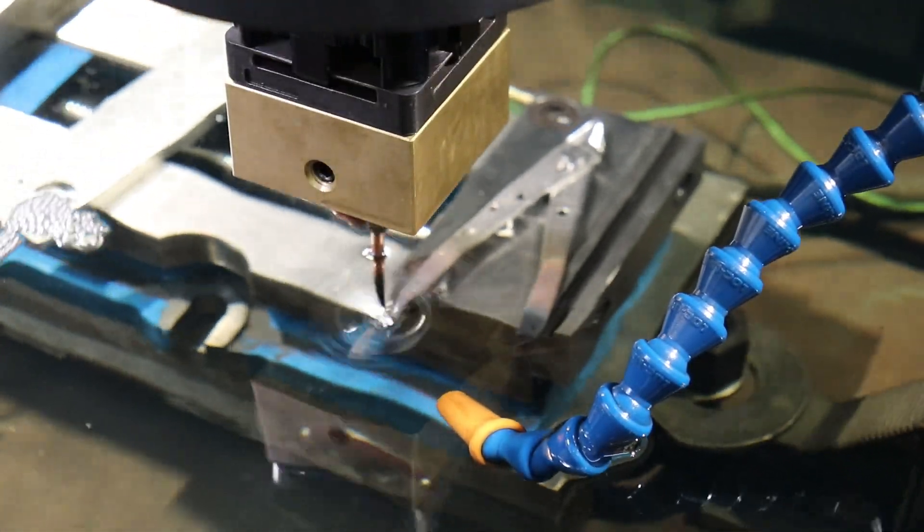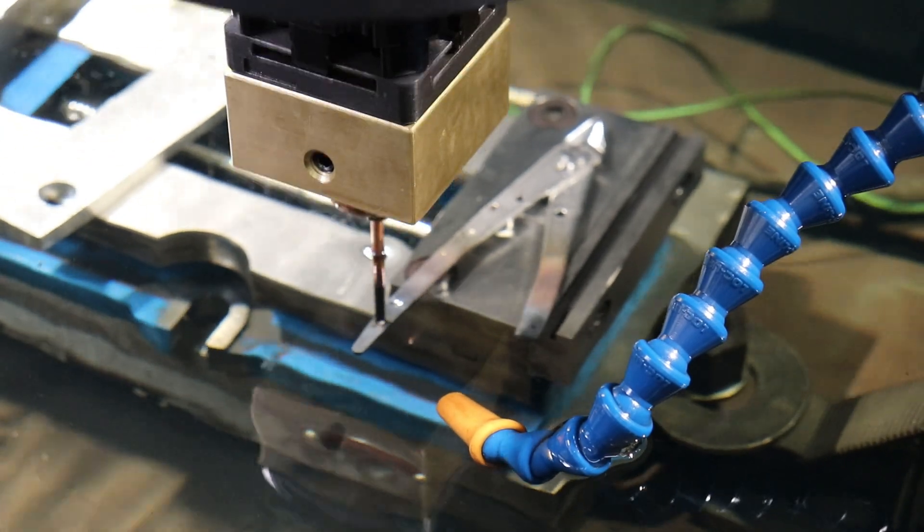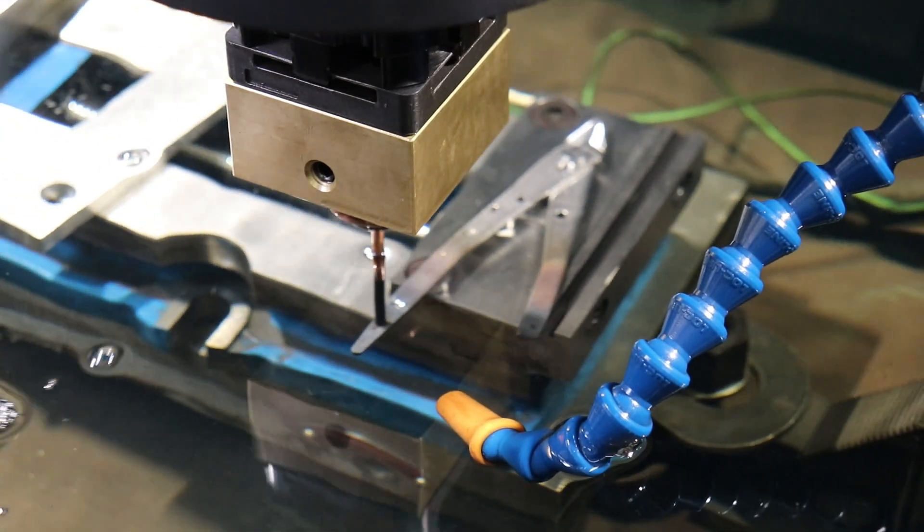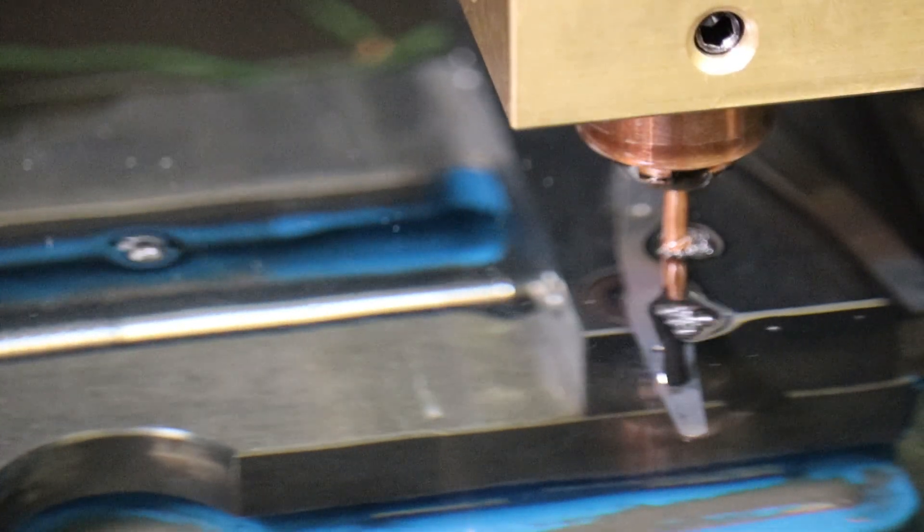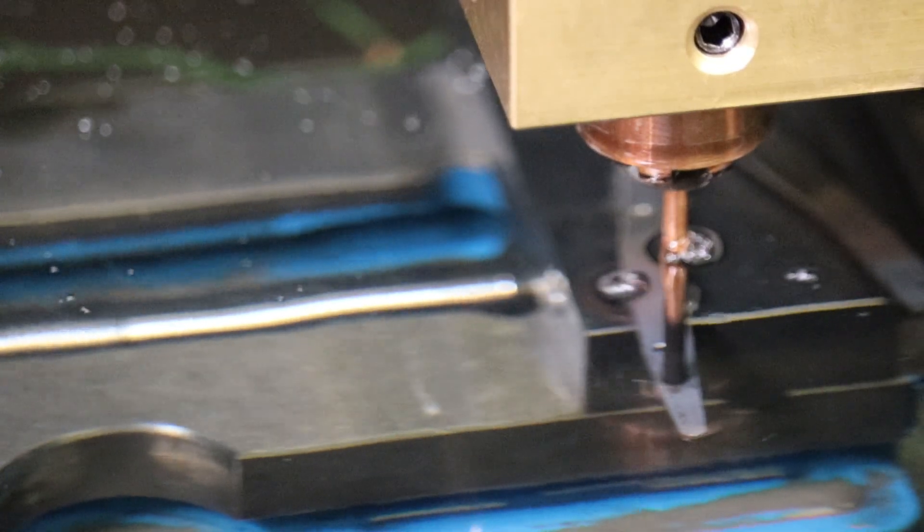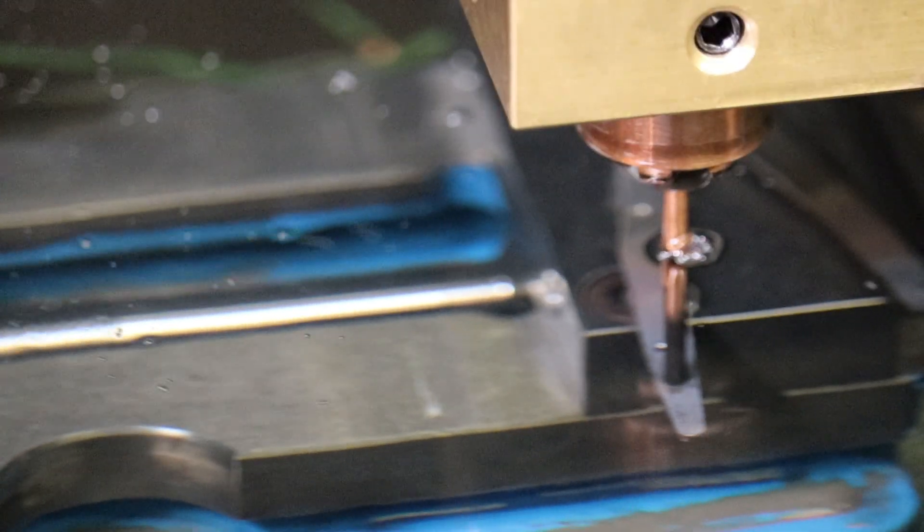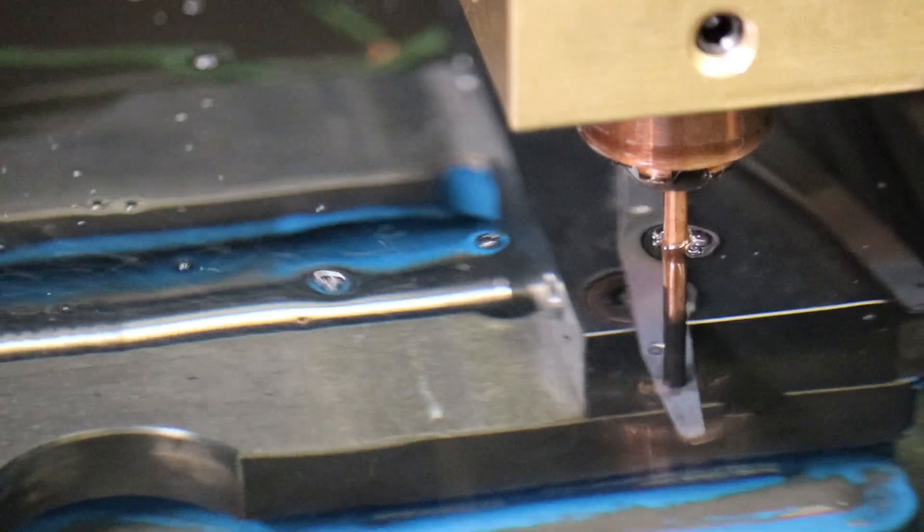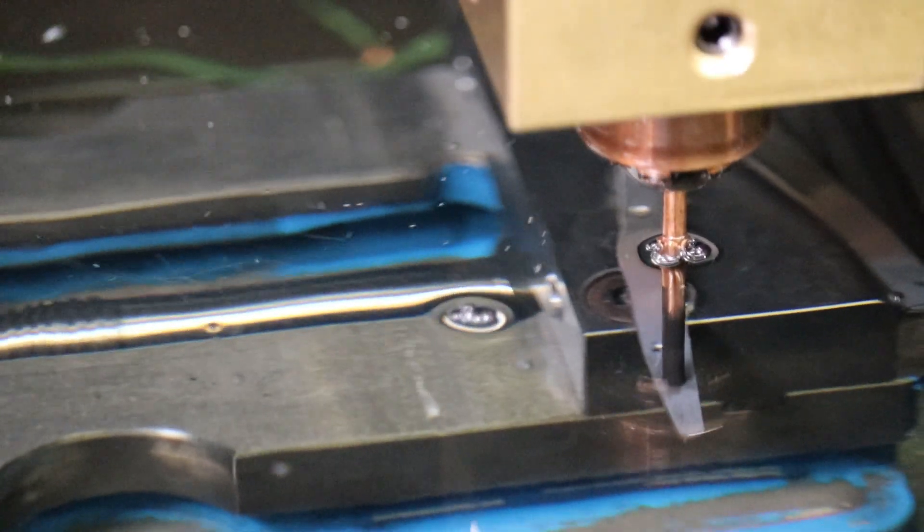The entire EDM process happens under a dielectric fluid, which is a thin oil. And here the EDM process is started and the head, which is electrified, bounces up and down and creates sparks between the copper and the steel of the handle. You can see the little sparks happening, and then the oil flushes out the debris, which is kind of pulverized, atomized little chunks of steel, mostly.